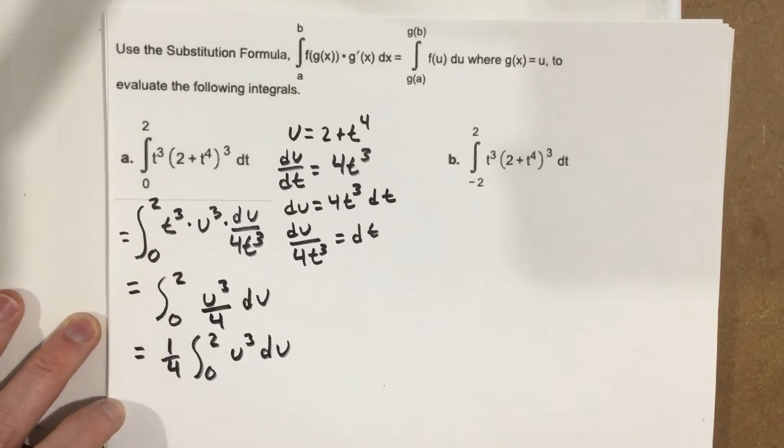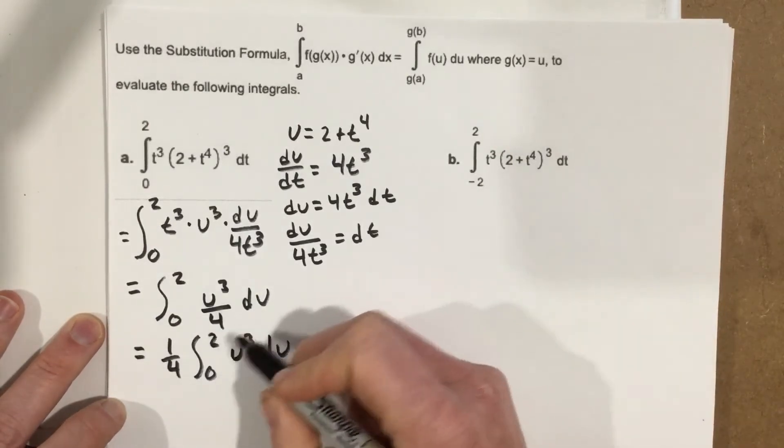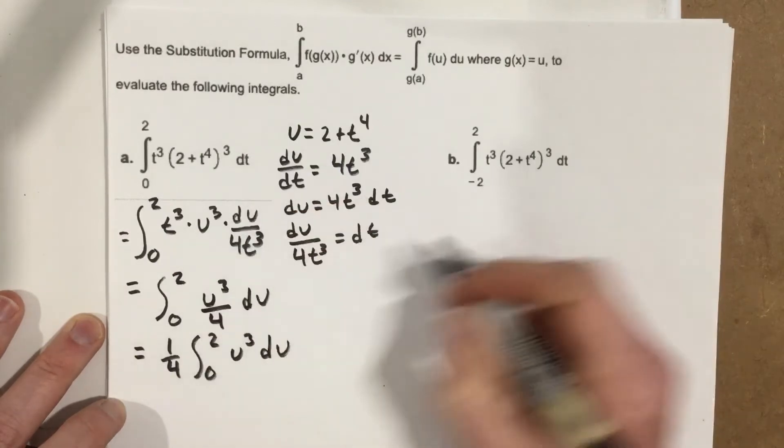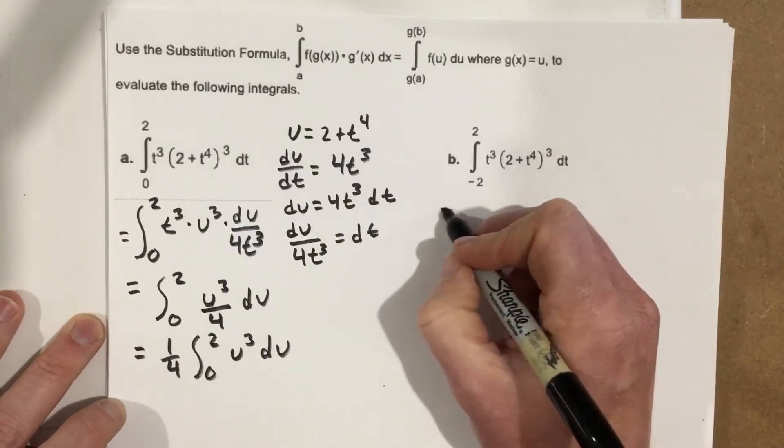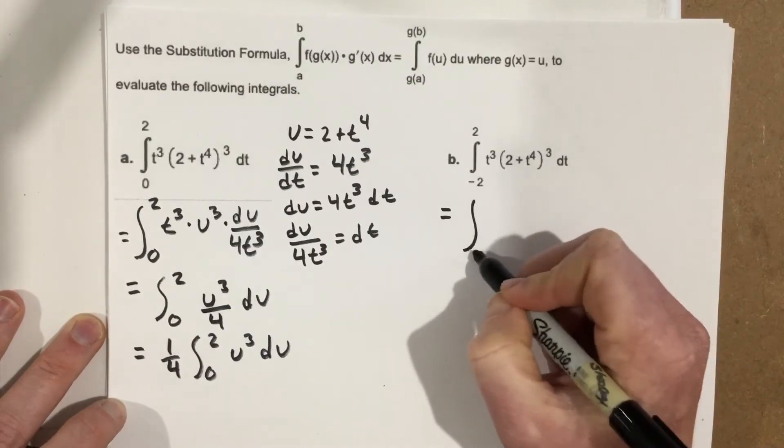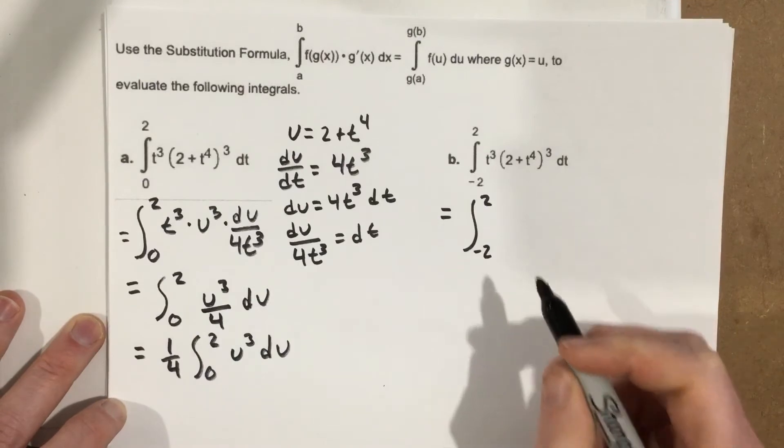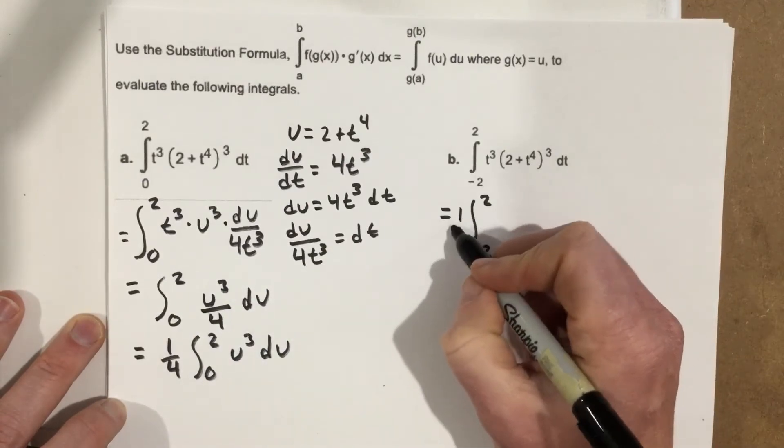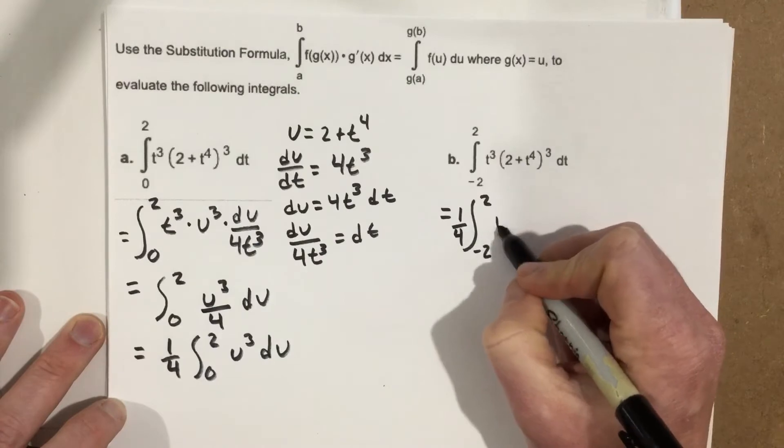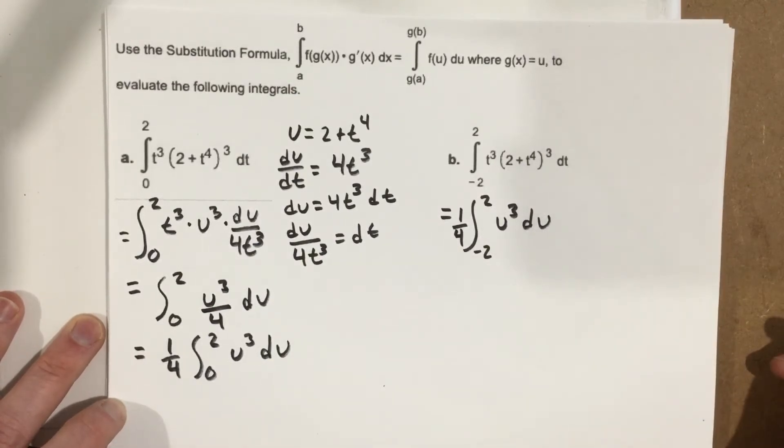Now, I haven't evaluated the integral yet, but I'm going to apply that same knowledge that we just used for this integral to this one. So that means this, if I skip some steps here, that's going to equal the integral from negative 2 to 2, because it's the same function, and this will be 1 4th out front, and I'll end up with u cubed du in here.